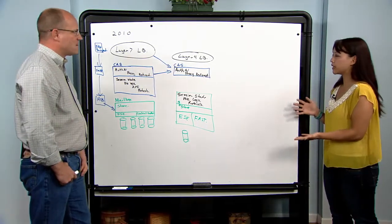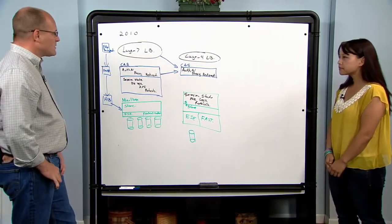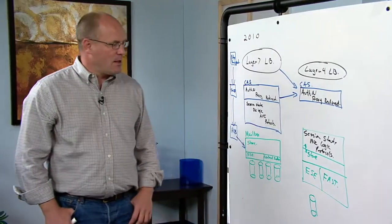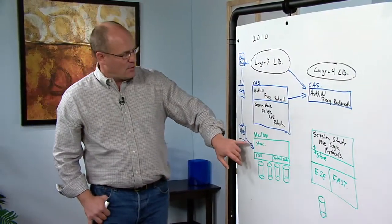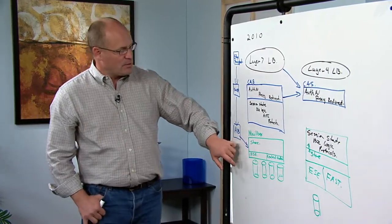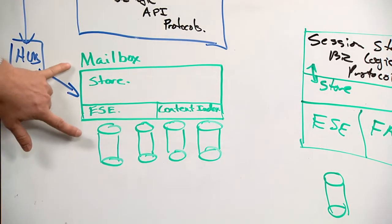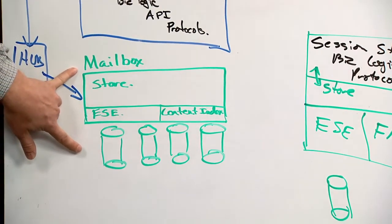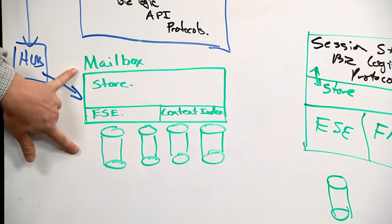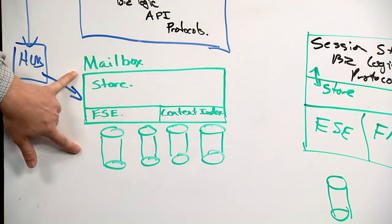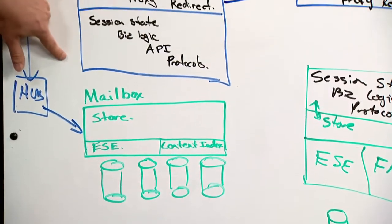So what about high availability in this new system? It's actually a key part of making this work. And over the last couple releases, we've been working a lot on our high availability story. And one of the interesting things we discovered was that we could get really good at doing failovers and doing that very quickly. If we ran into an issue, we could get a failover done in 30 seconds or less.